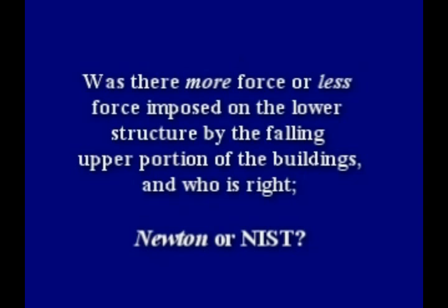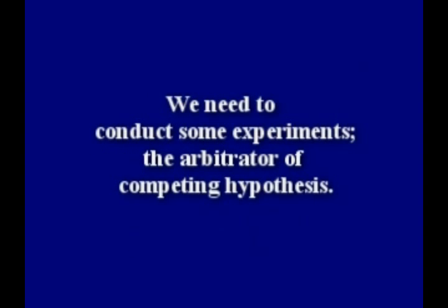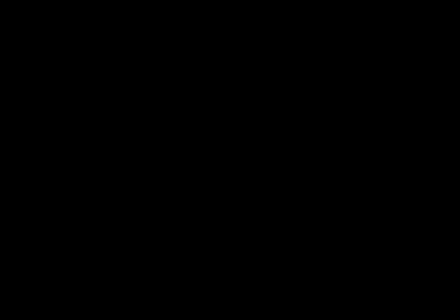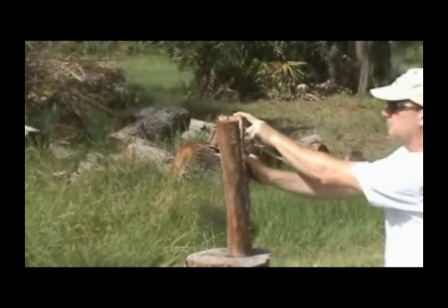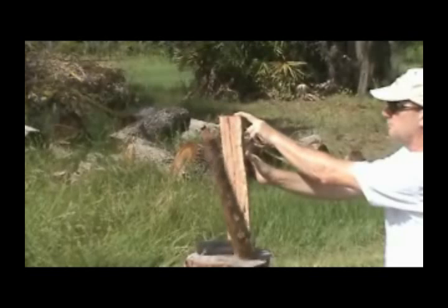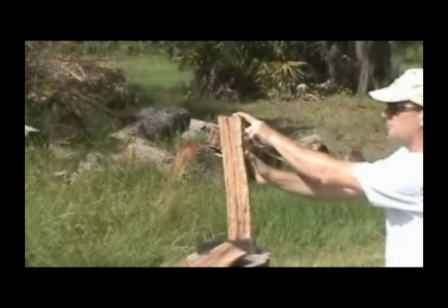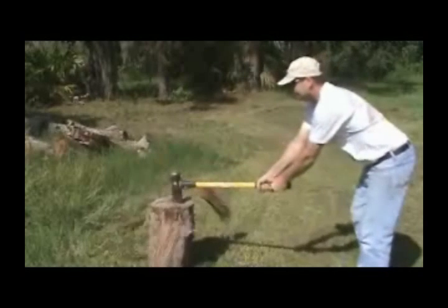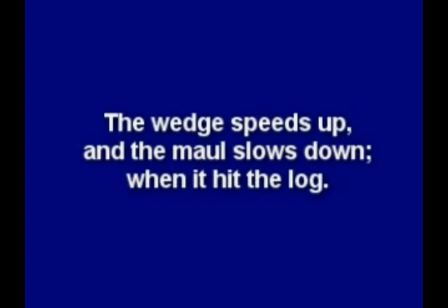Newton or NIST? We need to conduct some experiments, the arbitrator of competing hypotheses. Let's look at the motion of two falling bodies: a splitting wedge and a splitting maul. The motion of this falling wedge and the motion of this maul look similar as both fall through the log. But the wedge speeds up and the maul slows down when it hits the log.